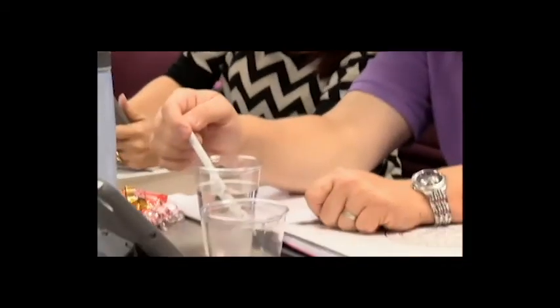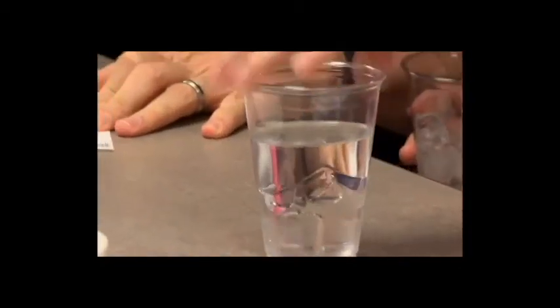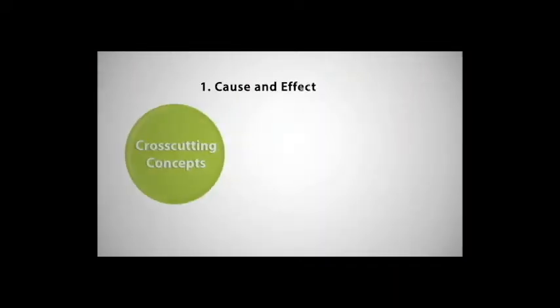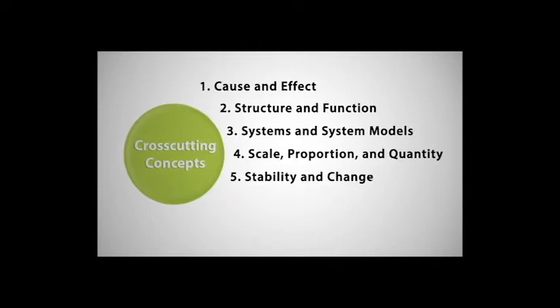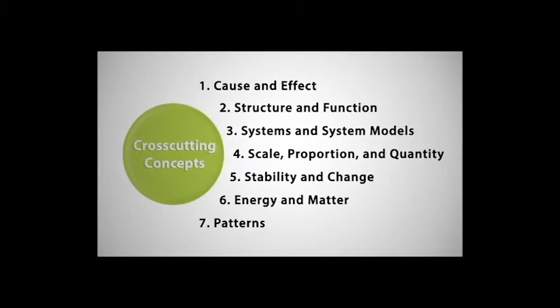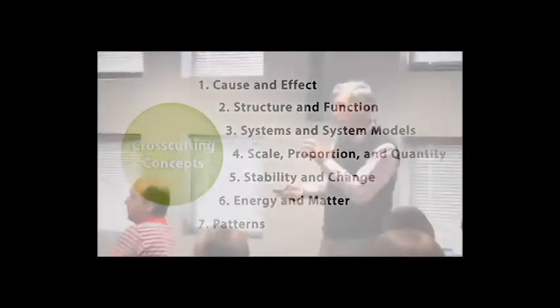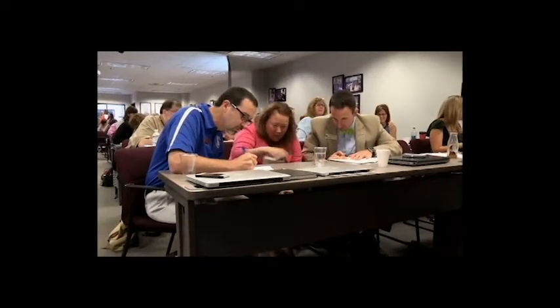Most of those ideas are not new — the integration of them, pulling those three dimensions together, is what's new. If we're going to have the kids doing that, instruction has to reflect it. A big shift is that we can focus in on something very specific to help teach a much broader, bigger idea, and that actually helps students apply knowledge to new scenarios and new situations. There are seven cross-cutting concepts organized around causality, structure and function, systems, scale and proportion, change and stability, matter and energy, and patterns. These cross-cutting concepts are tools that children use to make sense of phenomena.